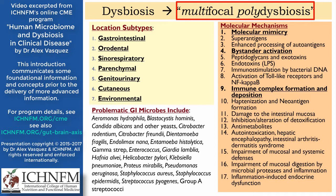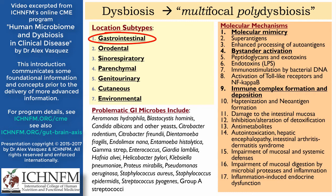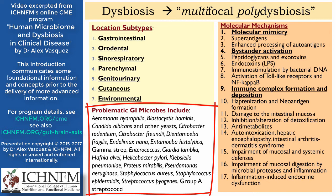Now we appreciate several different location-specific subtypes of dysbiosis. Those include gastrointestinal dysbiosis, orodental dysbiosis, sinorespiratory dysbiosis, parenchymal dysbiosis, genitourinary dysbiosis, and also cutaneous and environmental dysbiosis.